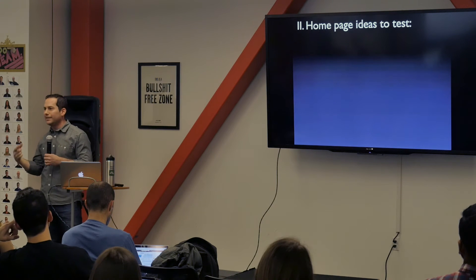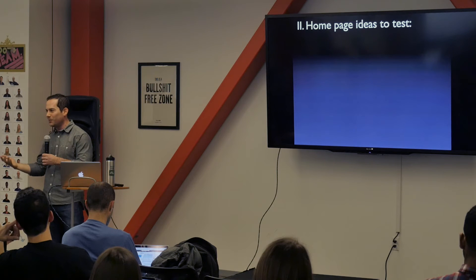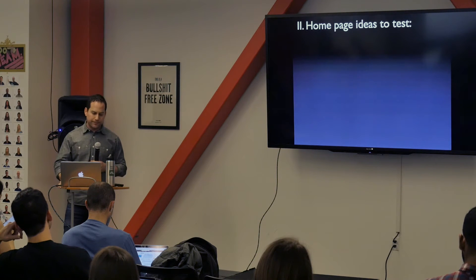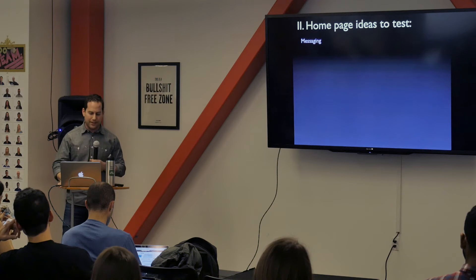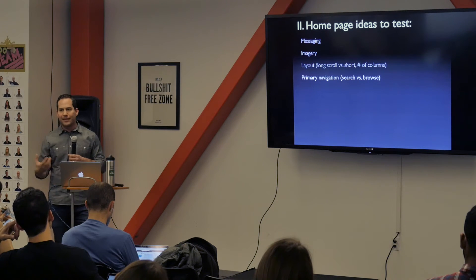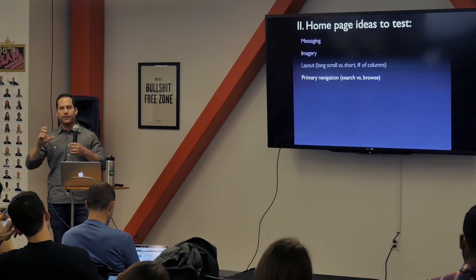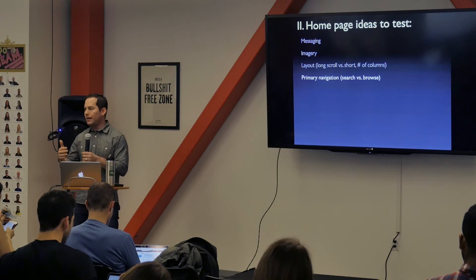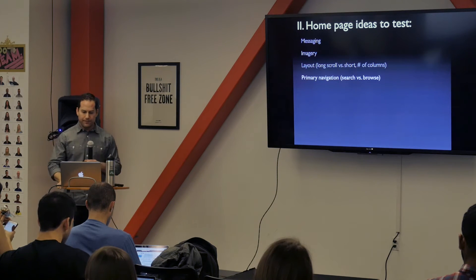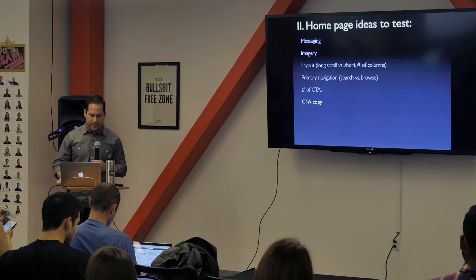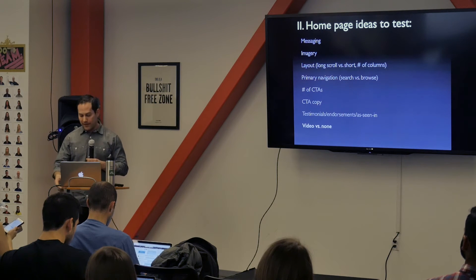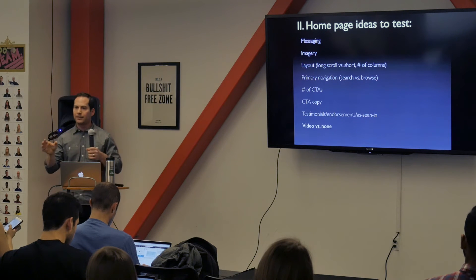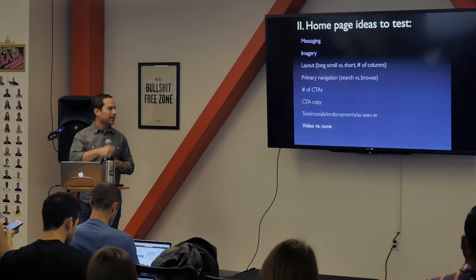Your homepage usually falls into the realm of low-hanging fruit. You'll see a lot of similarities with landing pages: messaging, imagery, layout, primary navigation. If you're selling a suite of products, do you want a big open-ended search box or guide users via a browse experience? Number of CTAs and CTA copy, social proof, video. What works on a landing page isn't necessarily going to work on the homepage — it's a totally different use case. Think through your end user and test these separately.